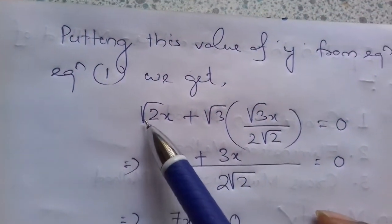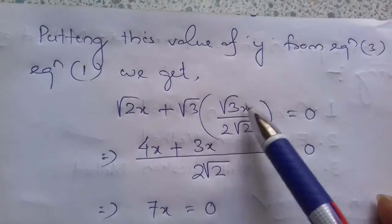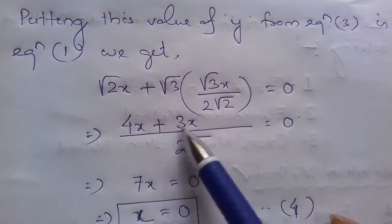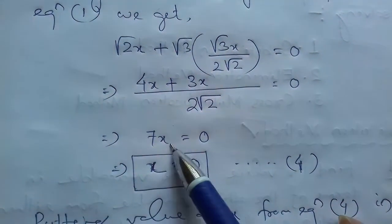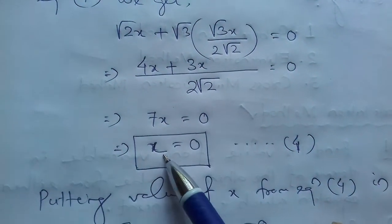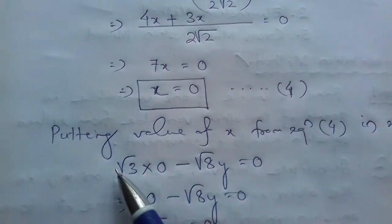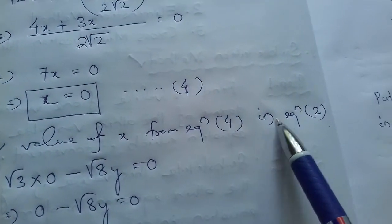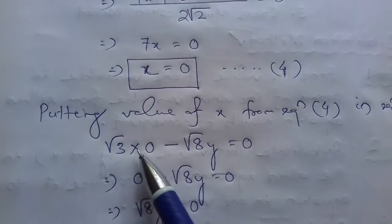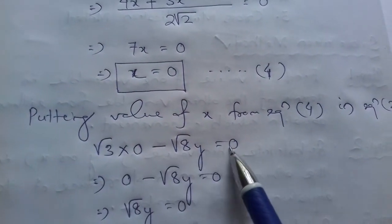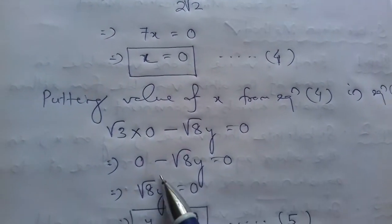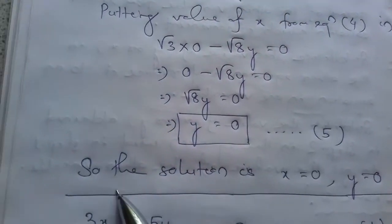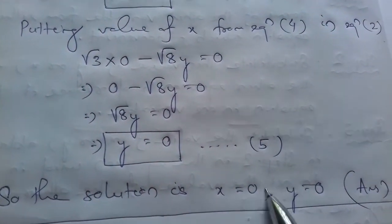Substituting: √2x + √3 × (√3x / 2√2) = 0, which simplifies to 7x = 0, so x = 0. That is equation 4. Putting the value of x from equation 4 into equation 2: √3 × 0 − √8y = 0. So the solution is x = 0 and y = 0.